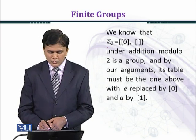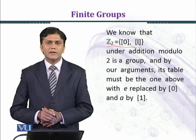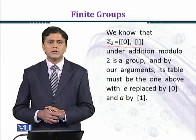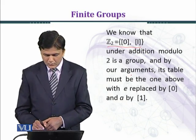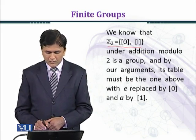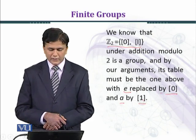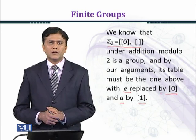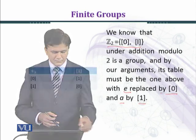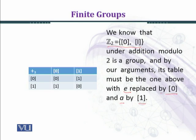Now we know that Z₂ equals {0̄, 1̄} and it is a group under the binary operation of addition modulo 2. Its table must be the one above with E replaced by 0̄ and A replaced by 1̄. In other words, Z₂ is isomorphic to the group we discussed previously. Constructing the table of Z₂ under addition modulo 2: 0̄ plus 0̄ equals 0̄, 0̄ plus 1̄ equals 1̄, 1̄ plus 0̄ equals 1̄, and 1̄ plus 1̄ equals 0̄, the identity element.